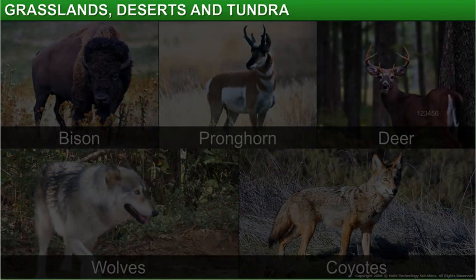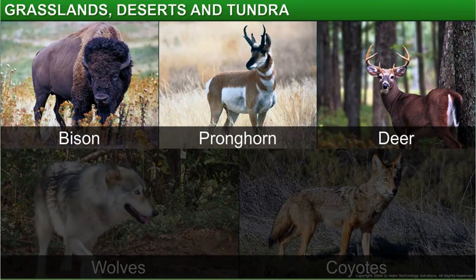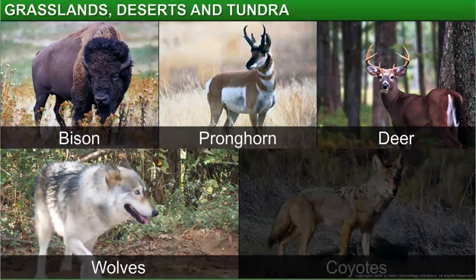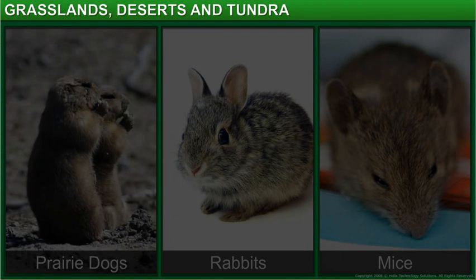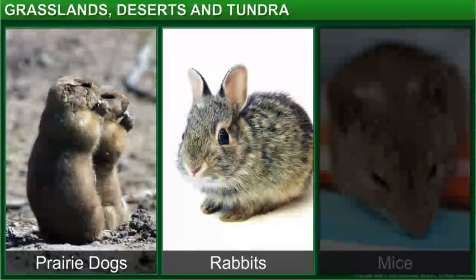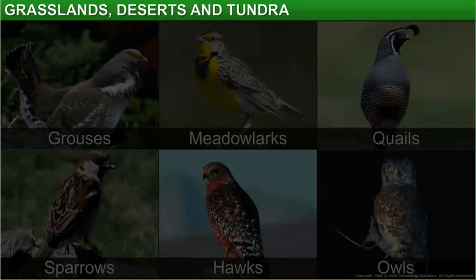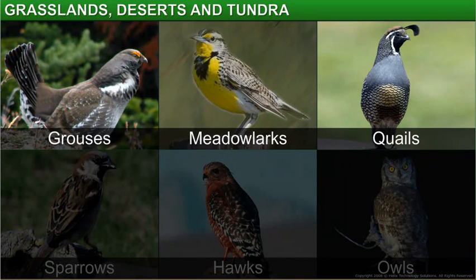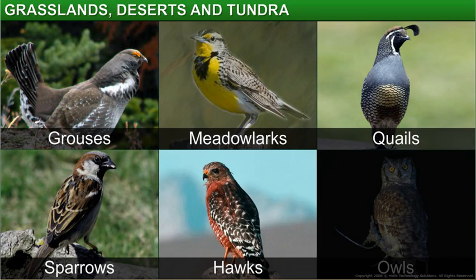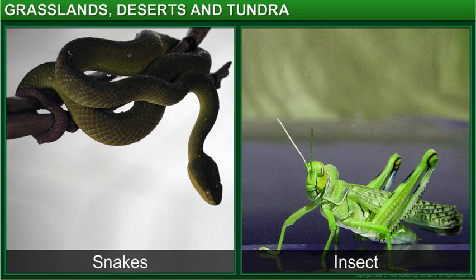Large animals like bison, pronghorn, deer, wolves, and coyotes live in temperate grasslands. Small animals like prairie dogs, rabbits, and mice live there too. You can also find birds like grouses, meadow larks, quails, sparrows, hawks, and owls, and snakes and insects in temperate grasslands.